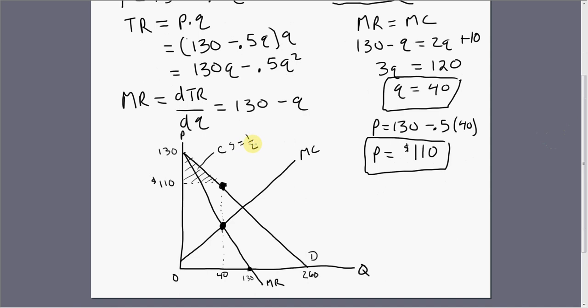So the dimensions of this triangle, geometry says the area of the triangle is one-half base times height, 130 minus 110, multiplied by 40 minus 0. And that will simplify down to $400. 20 times 40 is 800 and half of that is $400. So that's consumer surplus under monopoly.